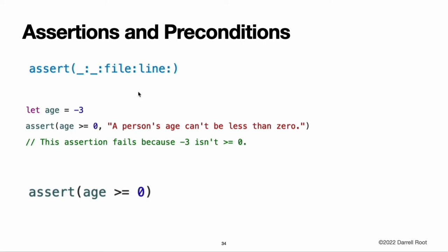Debugging with assertions. You write an assertion by calling the assert(_:_:file:line:) function from the Swift Standard Library. You pass this function an expression that evaluates to true or false, and a message to display if the result of the condition is false. In this example, code execution continues if age >= 0 evaluates to true — that is, if the value of age is non-negative. If the value of age is negative, as in the code above, then age >= 0 evaluates to false and the assertion fails, terminating the application.